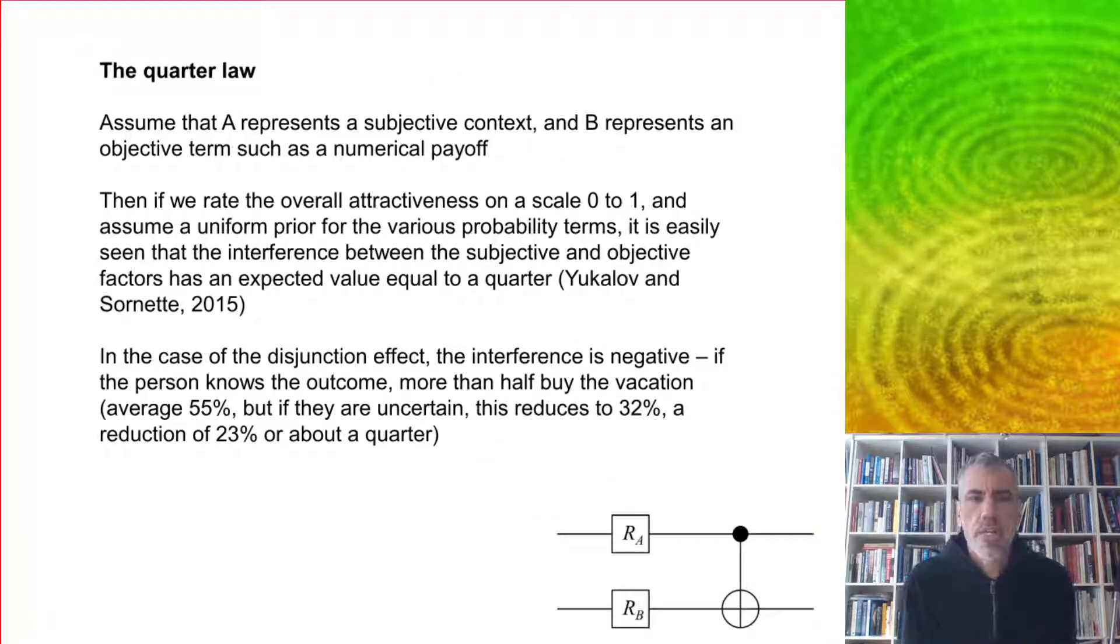In general, we can assume that A represents some kind of subjective context, and B represents an objective term such as a numerical payoff. If we rate the overall attractiveness of different possibilities on a scale of zero to one, and assume a uniform prior for the various probability terms, then it's easily seen that the interference between the subjective and objective factors has an expected value equal to about a quarter. This was shown by Yukalov and Sornette using their version called quantum decision theory.